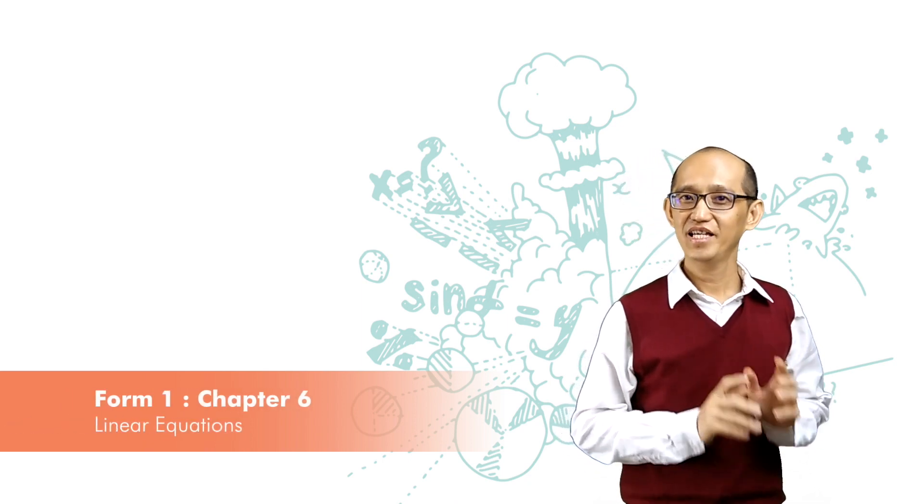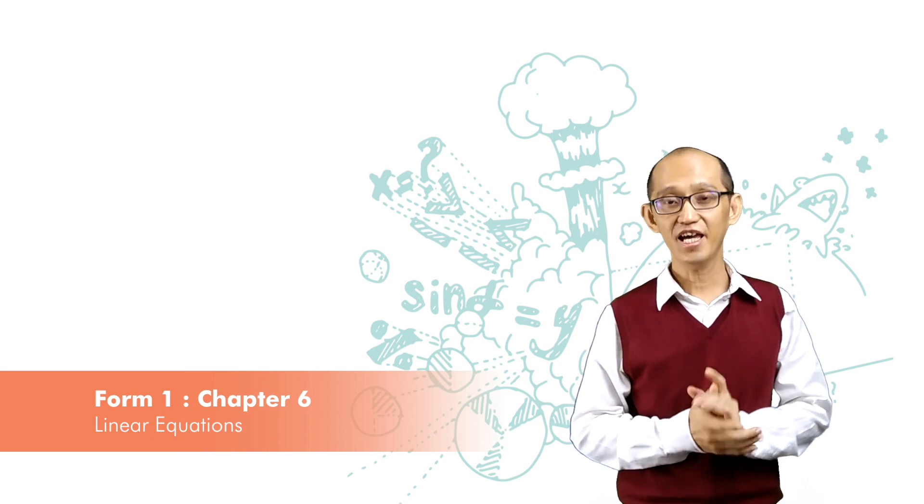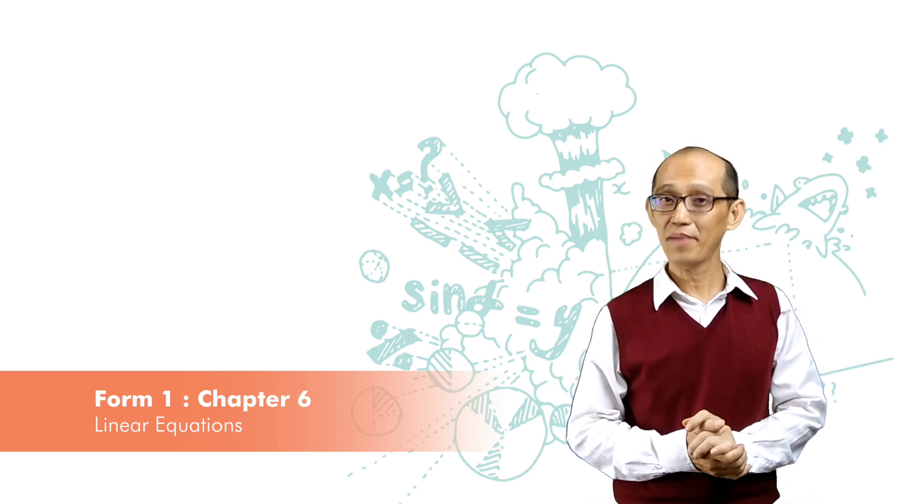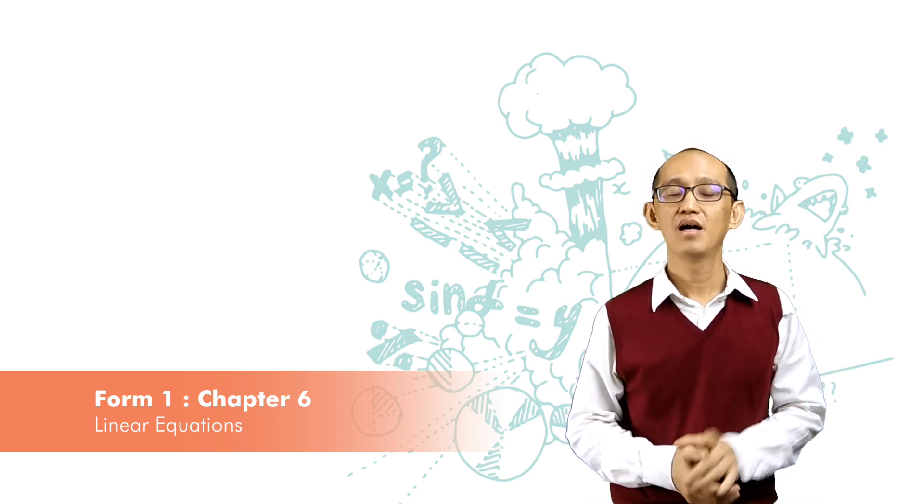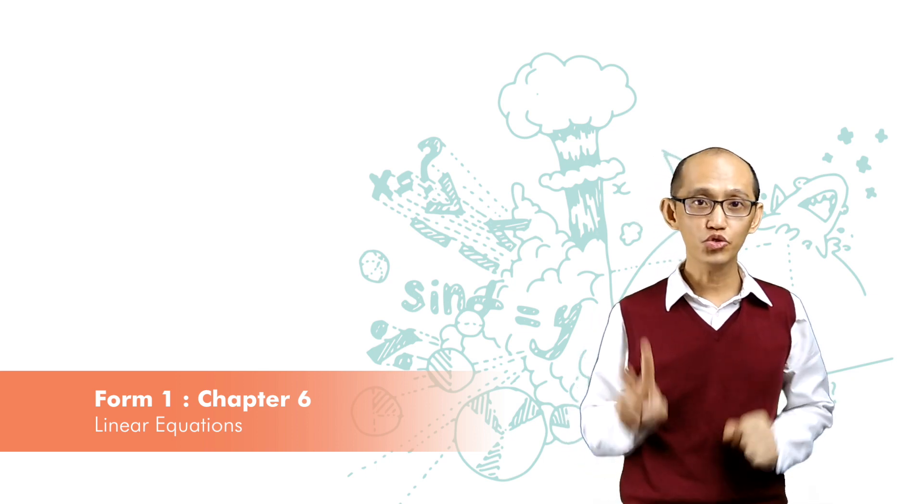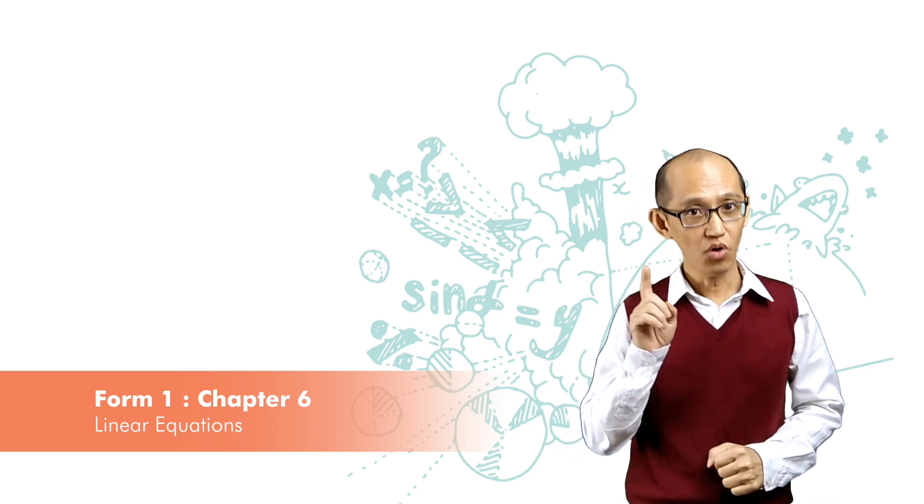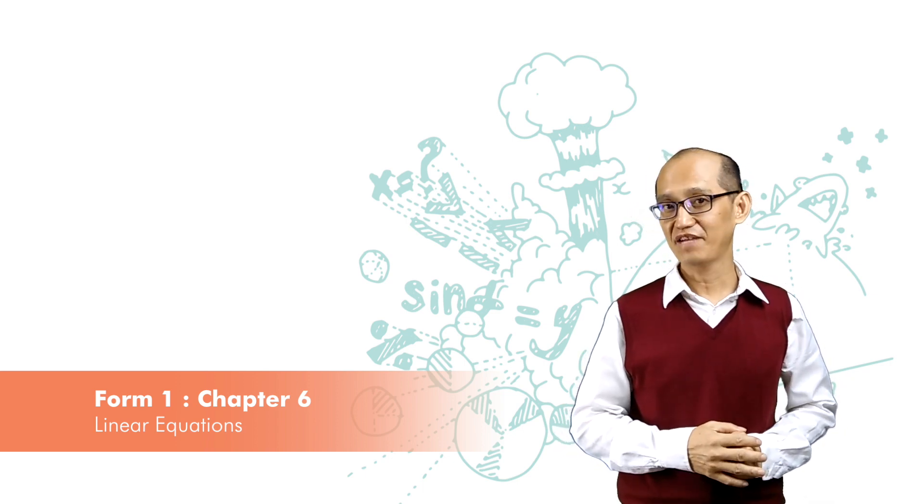Now we know that in a linear equation in two variables, it can have many sets or pairs of answers. But in simultaneous equations where there are two linear equations in two variables, they can have one definitive answer.